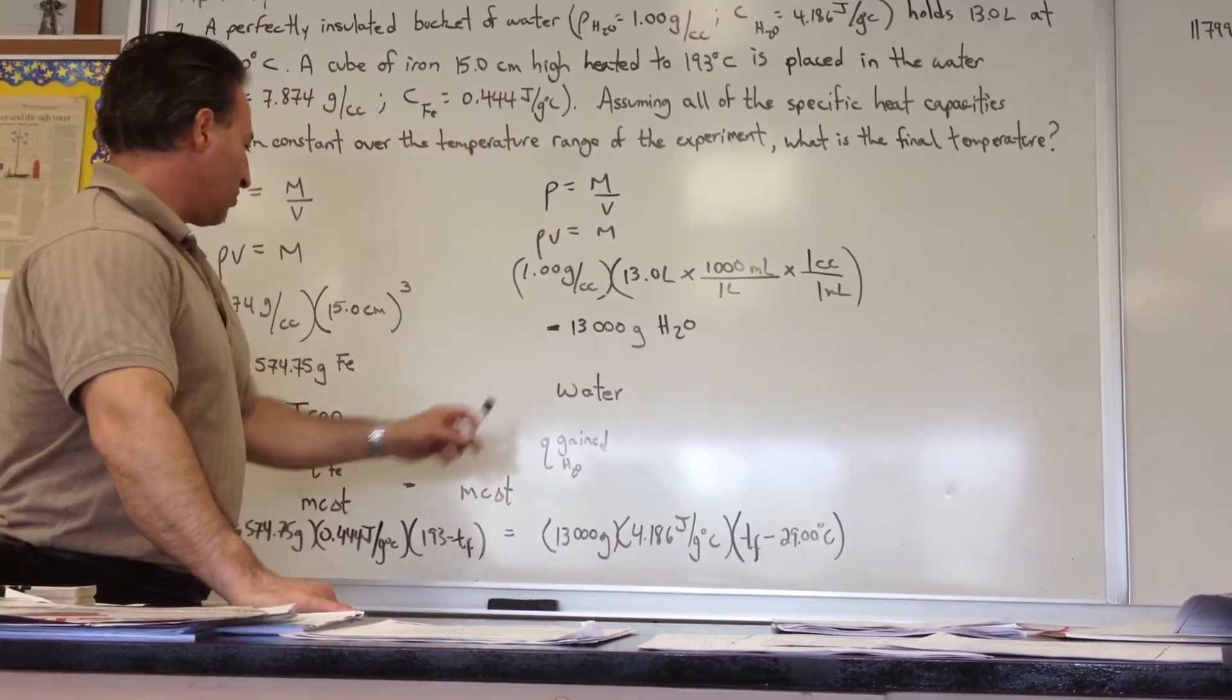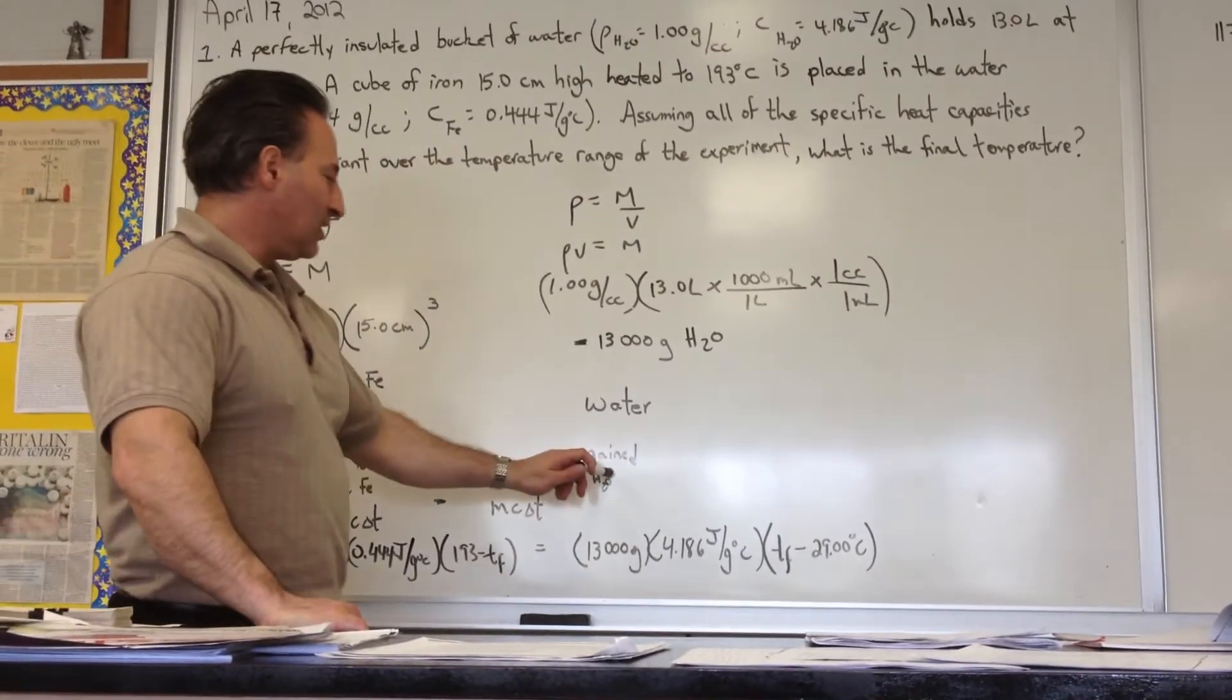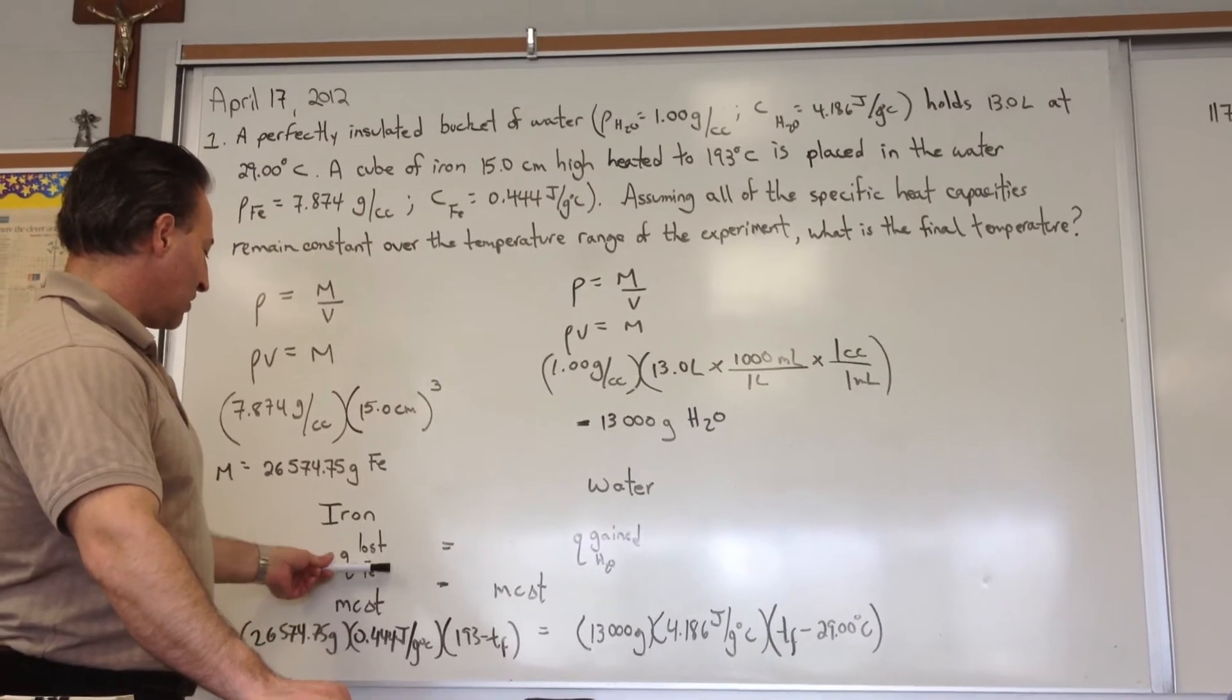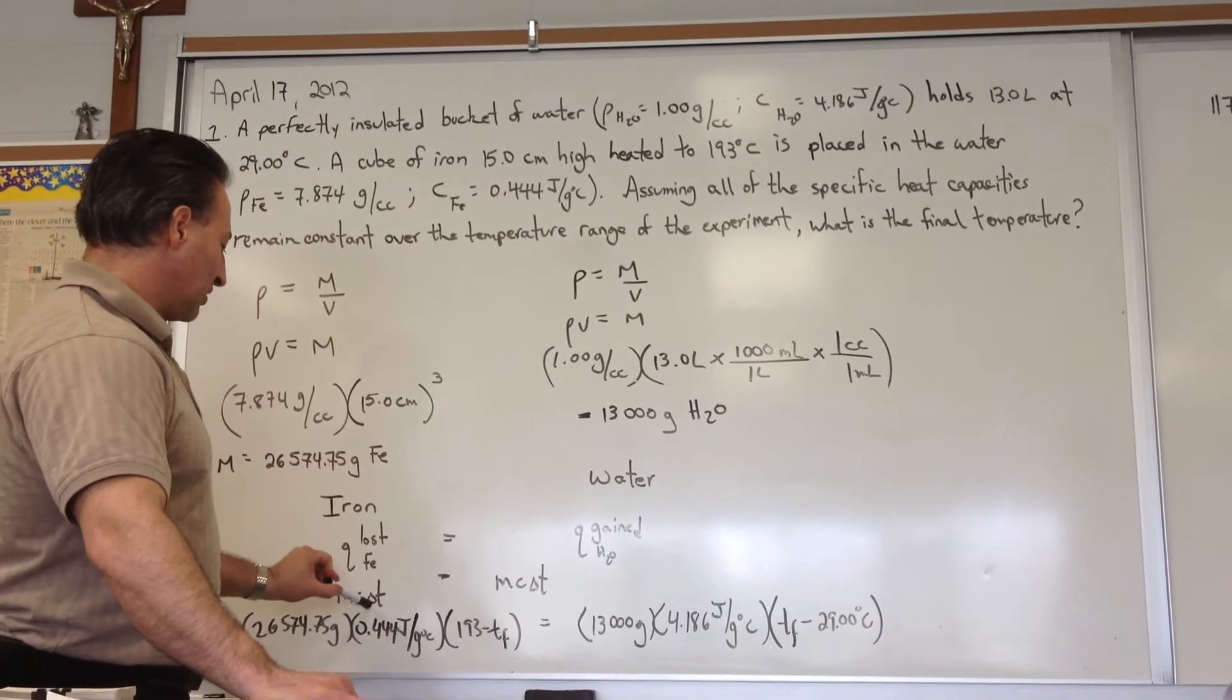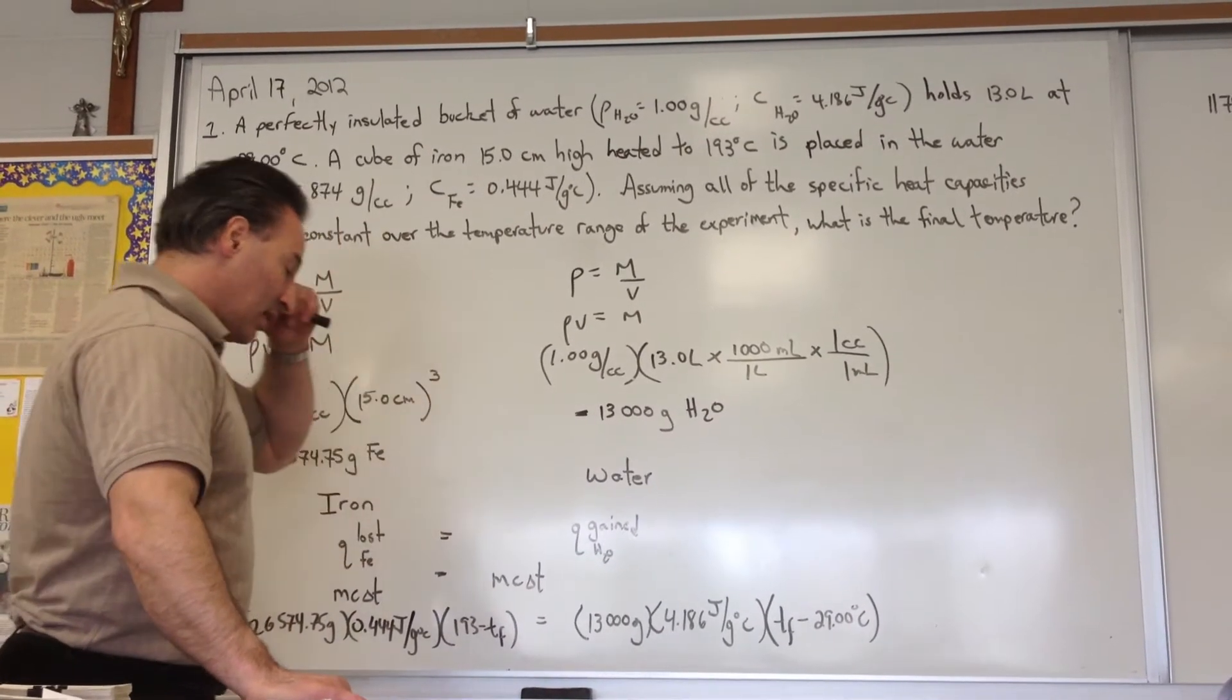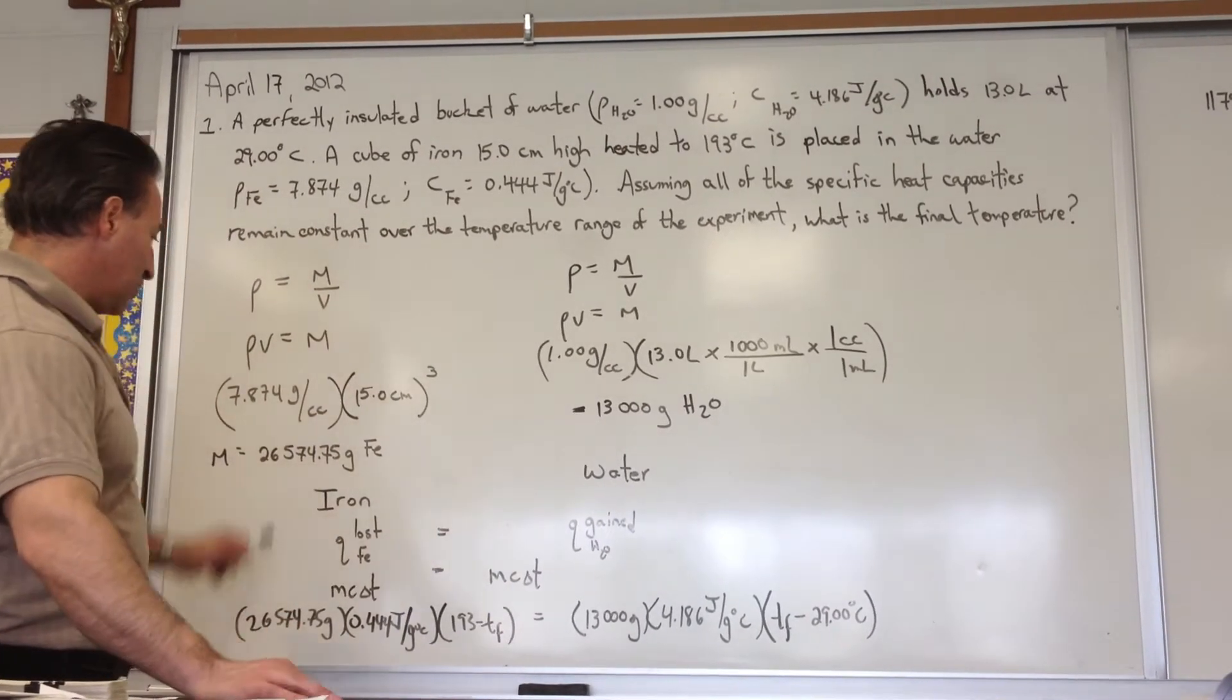We'll set up an equation where we say that the heat lost by the iron is equal to the heat gained by the water. Then we simply replace Q, which is a symbol of heat flux, with mc delta t, because Q equals mc delta t. So we replace both of those variables.